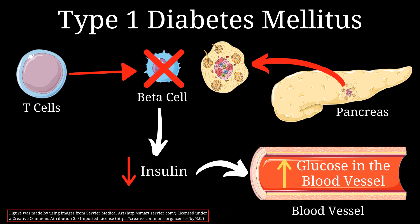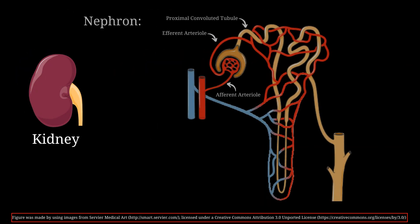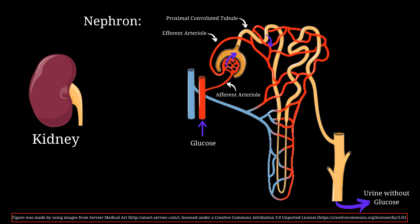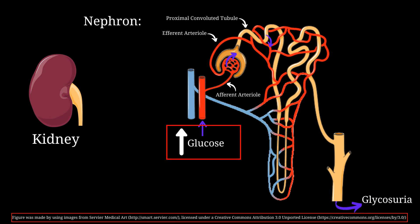Let's discuss the symptoms one by one. The functional unit of the kidney is the nephron, where urine formation takes place. It includes the glomerulus where filtration occurs, and the proximal convoluted tubule where reabsorption takes place. Physiologically, some glucose is filtered into Bowman's capsule and then fully reabsorbed in the proximal convoluted tubule. However, in diabetes, because blood glucose levels are very high, the reabsorption threshold of the proximal convoluted tubule is surpassed, resulting in glucose being dumped into the urine — a condition called glycosuria.